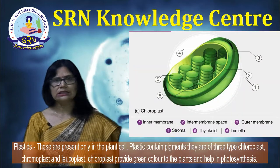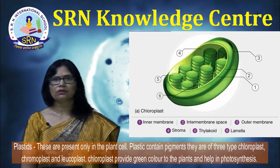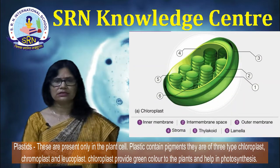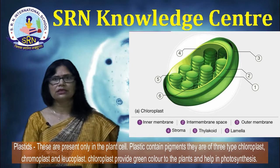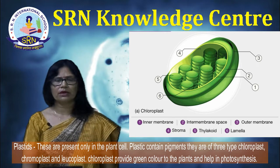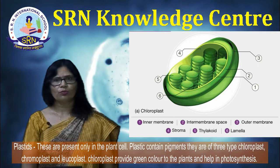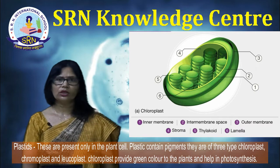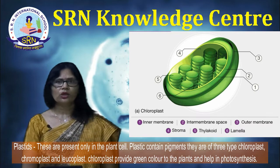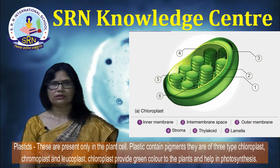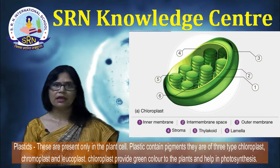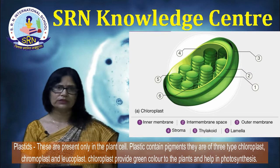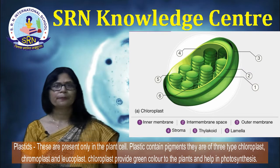Plastids are present only in plant cells. Plastids contain pigments. They are of three types: chloroplasts, chromoplasts, and leucoplasts. Chloroplasts provide green color to plants and help in photosynthesis.